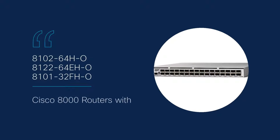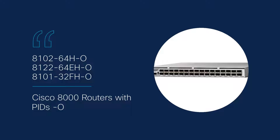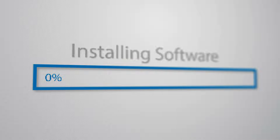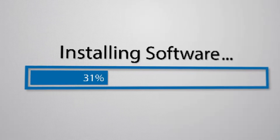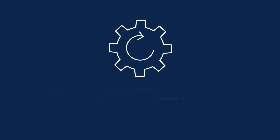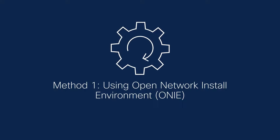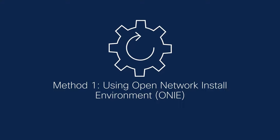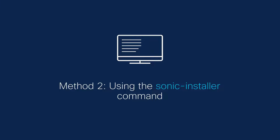Cisco 8000 series routers with PIDs ending with O are shipped with SONiC and are pre-installed with Open Network Install Environment (ONIE). In this video, we will explore two methods to install a new SONiC image on your Cisco 8000 series router. The first method uses the Open Network Install Environment (ONIE), and the second method uses the SONiC Installer command.